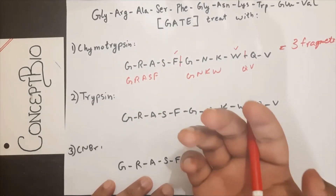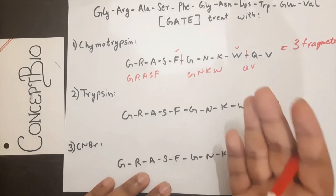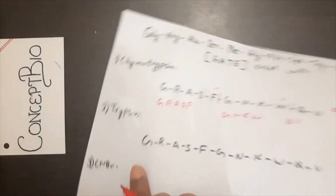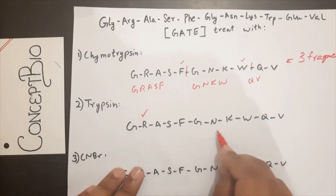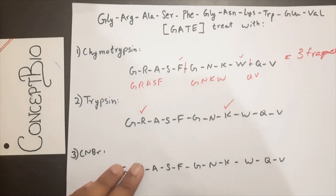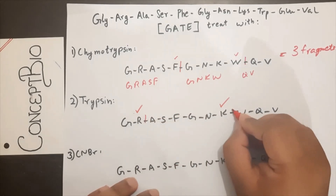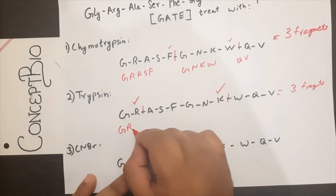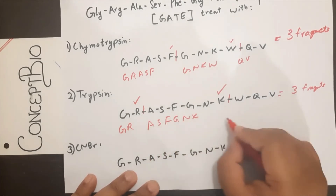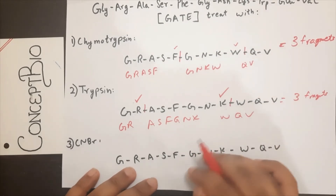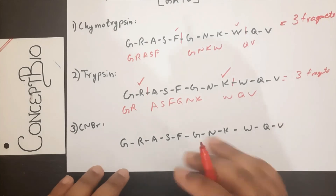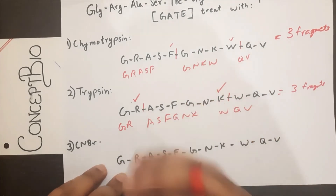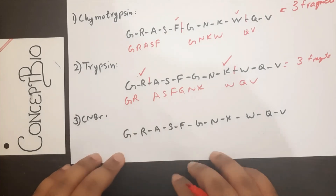For comparison, let's apply trypsin. Trypsin cleaves after lysine and arginine on the carboxyl end. Looking at the same sequence, we find arginine and lysine. Cleaving after each gives three fragments again: GNR, ASFGNK, and WQV. You can see how different proteolytic enzymes yield different fragment lengths and sequences from the same peptide chain.